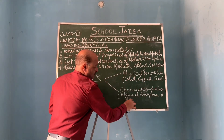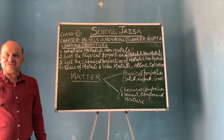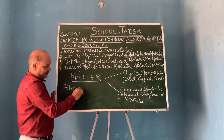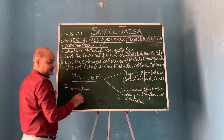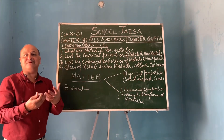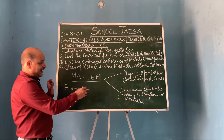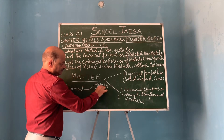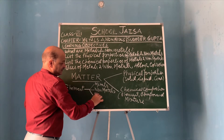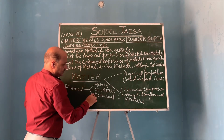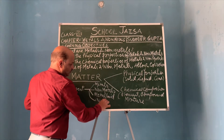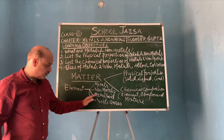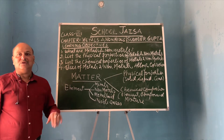Here we start with Chapter 9, because metals and non-metals starts with elements. When elements are grouped according to their physical and chemical properties, they are either metals, non-metals, metalloids, or noble gases.